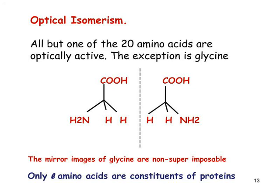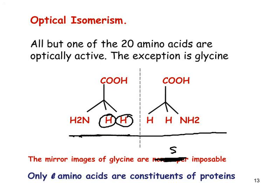Apart from glycine, where the R group is hydrogen, 19 of the amino acids have an alpha carbon with four different groups attached. In the case of glycine, the alpha carbon is not optically active — its mirror images are superimposable. But in the case of the other 19 amino acids, the mirror images are non-superimposable. For each of those 19, there are two forms: an L form and a D form.